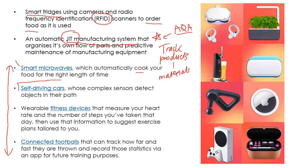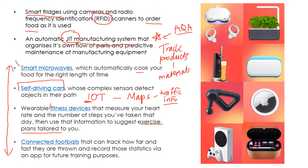Self-driving cars are massively connected to the Internet of Things. They use lots of sensors to detect objects in their path, but they also use maps for things like traffic information, which requires connection to the Internet. Wearable fitness devices measure your heart rate and the number of steps you've taken, and then use that information to suggest exercise plans tailored to you — using your data to provide custom plans just for you.